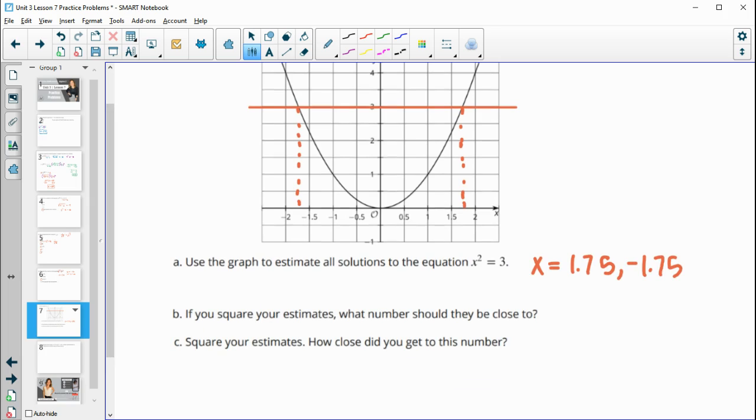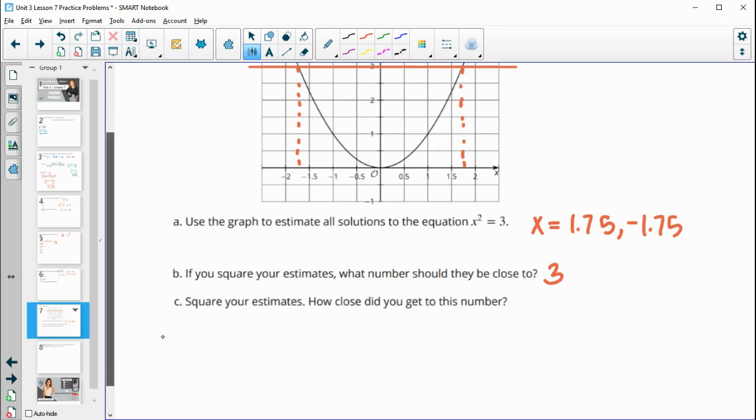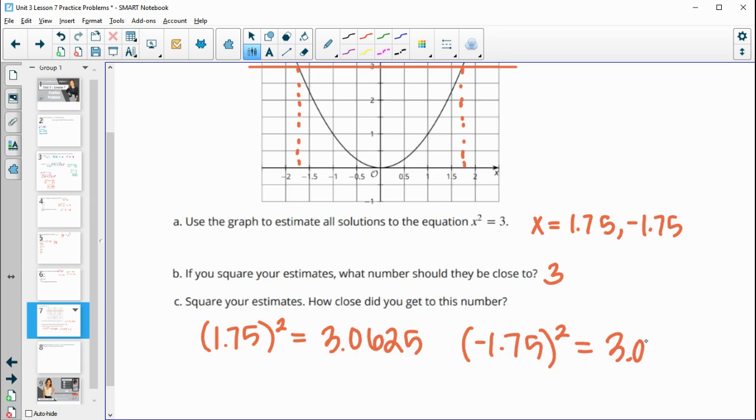So then part B says, if you square your estimate, what number should they be close to? So we estimated that this number squared would be 3. So it should be close to 3 when we square it. So then let's actually square these. So 1.75 times 1.75. And maybe your estimate was different than mine. This is just what I chose. And 1.75 squared is 3.0625. So negative 1.75 squared is also 3.0625. So pretty close, pretty good estimate there.